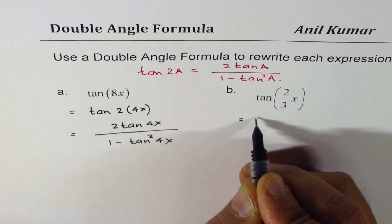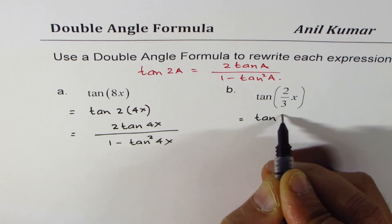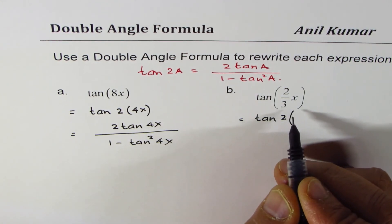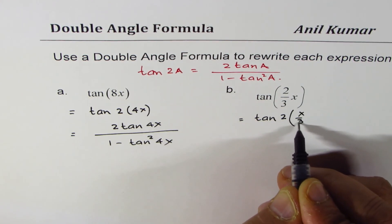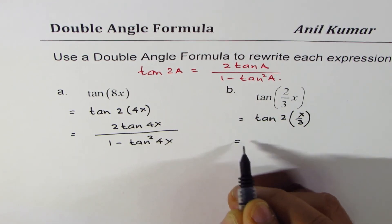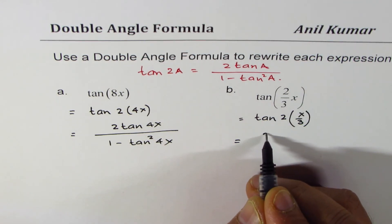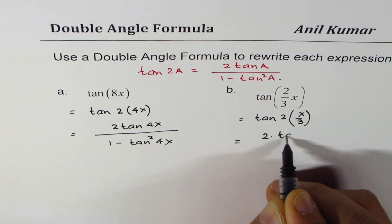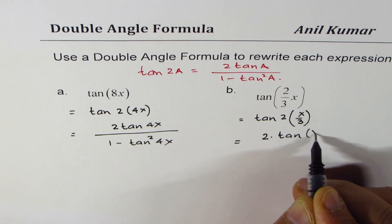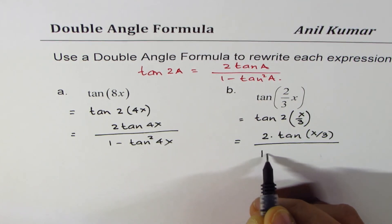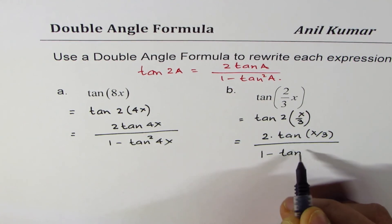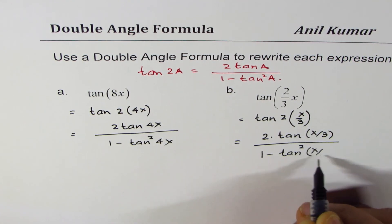In the second case, I could write this as tan 2 times, so if I take 2 common, then I'm left with x over 3. And I could apply this formula and write it as 2 times tan of x over 3 divided by 1 minus tan square x over 3.